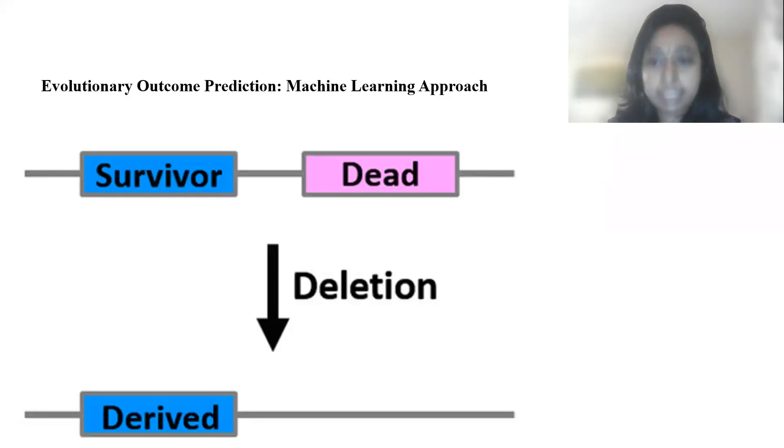In genetics, deletion is one kind of mutation in which a part of a chromosome or a sequence of DNA is left out during DNA replication.